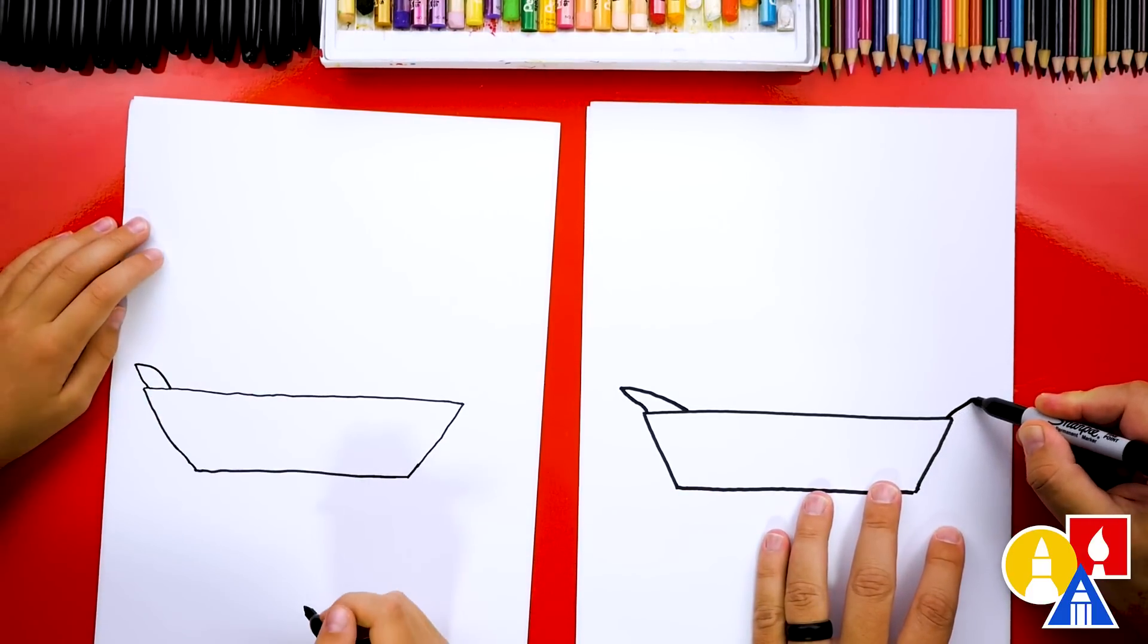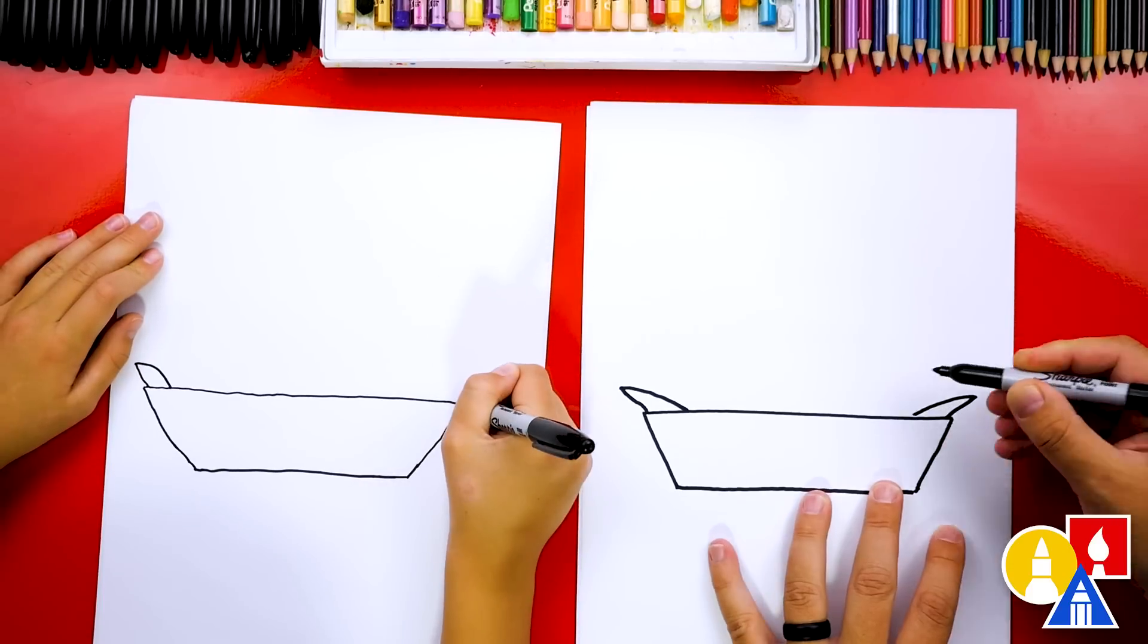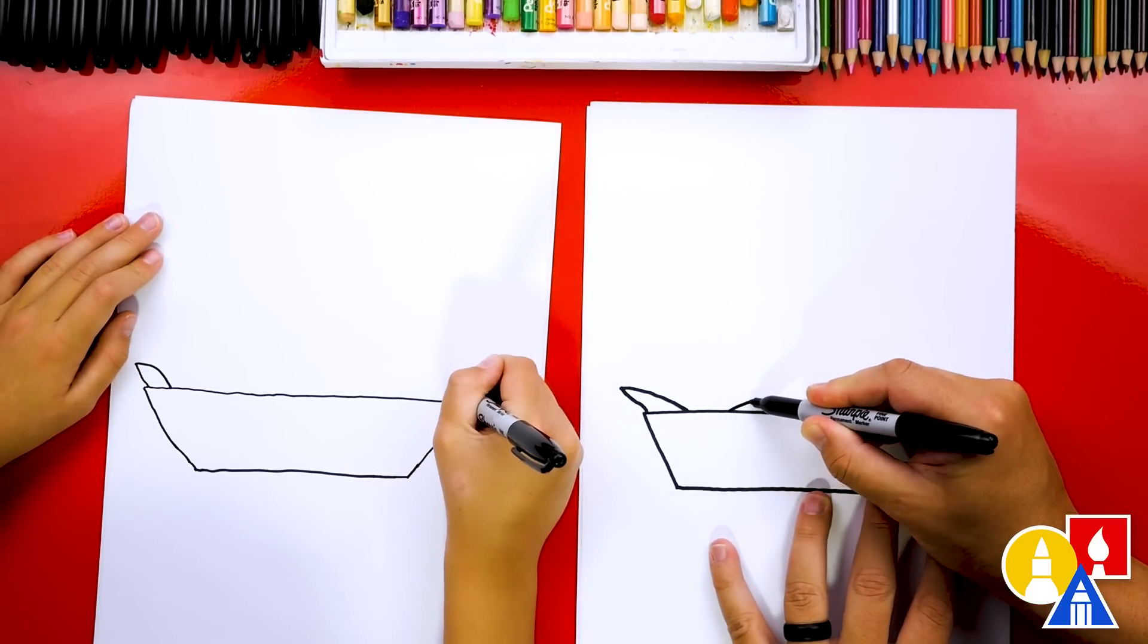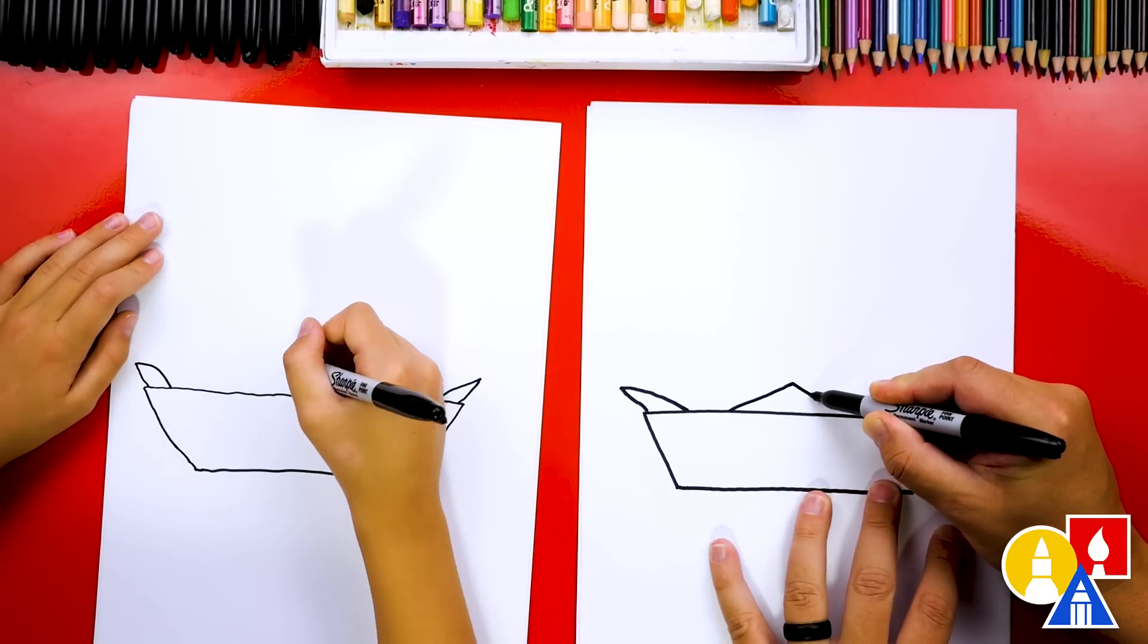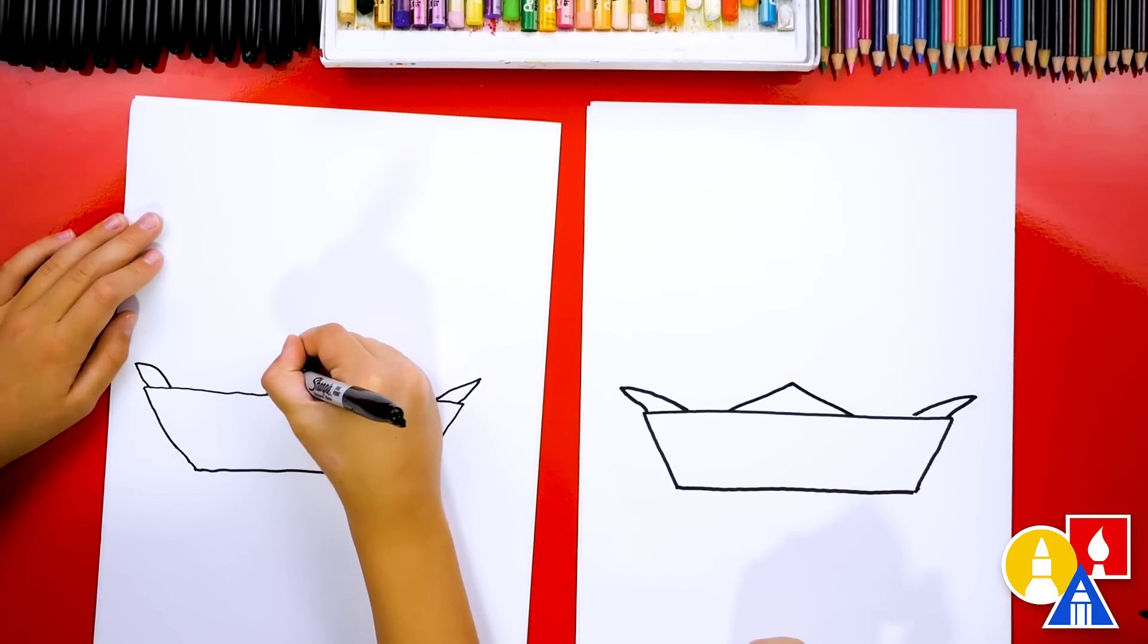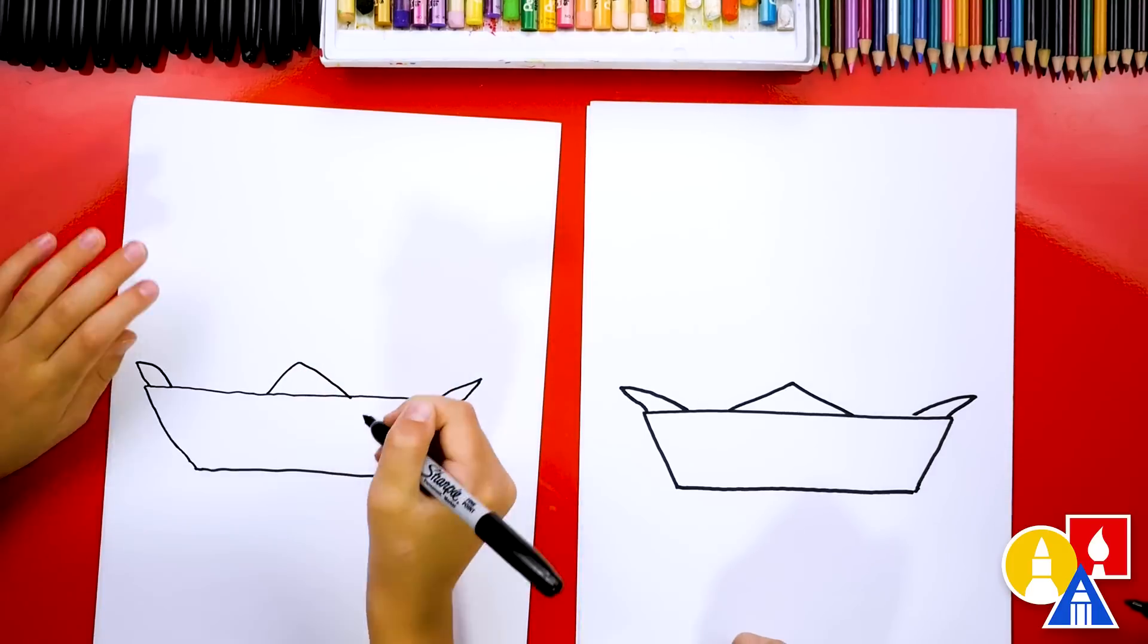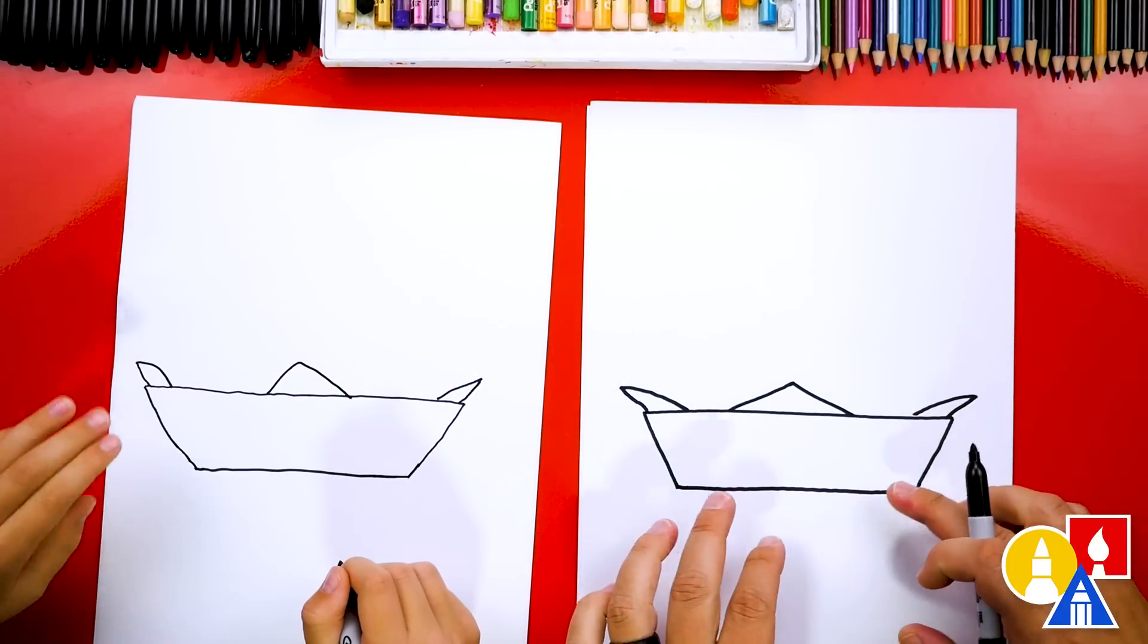And we can do the same thing on the other side. And then I'm also going to draw a little corner right here in the middle. And then we'll add the red stripes when we're coloring it. Let's move on to drawing the onion rings.